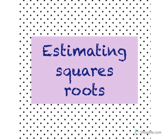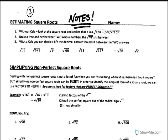We're going to estimate square roots. We're used to perfect square roots — those are anything that you can take the square root of and it becomes a whole number. So like the square root of 4 is going to be positive or negative 2. Without a calculator, look at the square root and realize that it is a non-perfect square root.